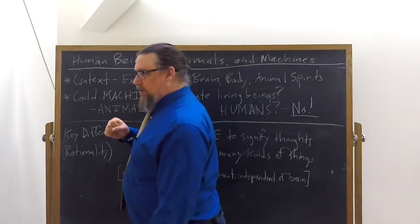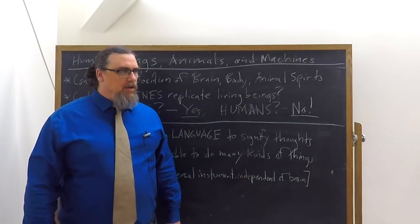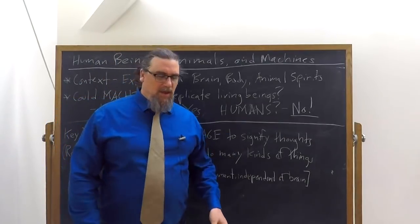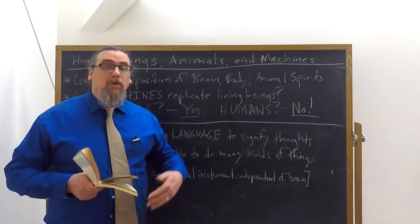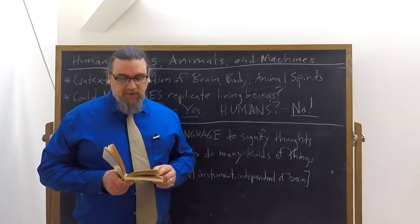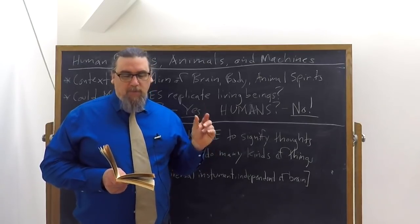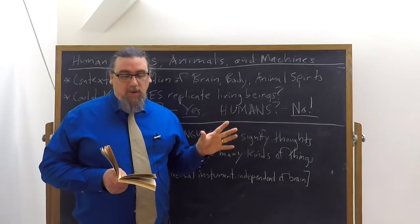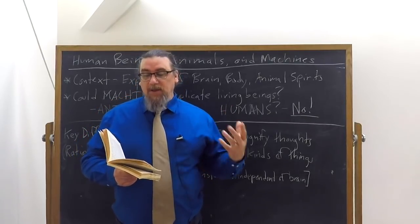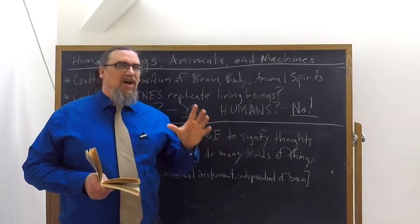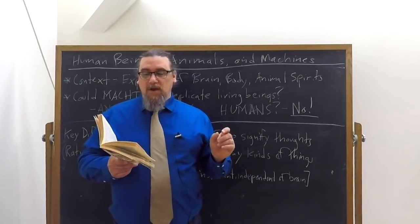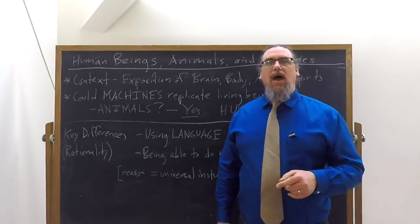What about human beings? Can we create something that would mimic a human being so successfully that eventually we would have to say it really is a human being? What if we took the human body and we mapped it out perfectly, and then we constructed a machine on that basis? He says, if there were machines having the organs and outward shape of a monkey or any other irrational animal, we would have no means of knowing they were not of exactly the same nature as those animals.